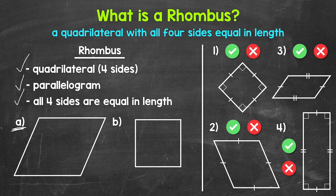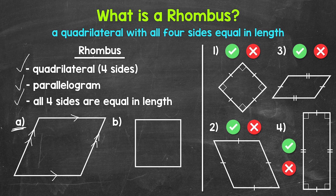Looking at example A, we can see that we have a quadrilateral. This is also a parallelogram. Opposite sides are parallel, and we can mark that using arrow symbols. One arrow here and here show that those sides are parallel, and then two arrows here and here show that those sides are parallel. Opposite angles are equal in measure as well, shown with arcs — one arc for one pair of opposite angles, and two arcs for the other pair. And then all four sides are equal in length, so we use a tick mark on each side to show that.